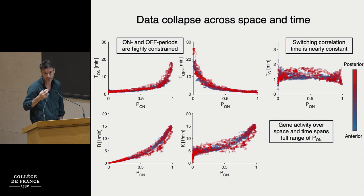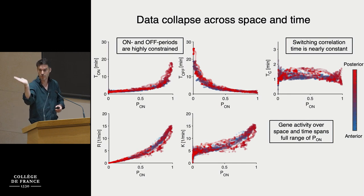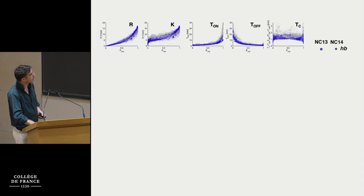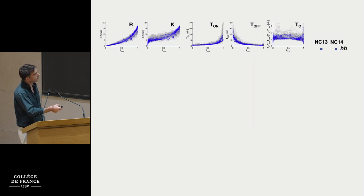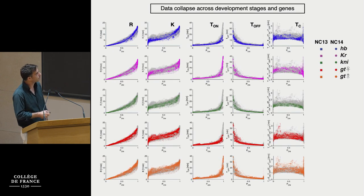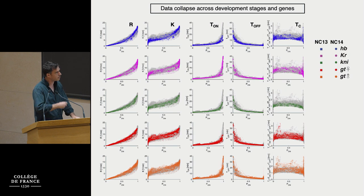This gives us a first timescale in the system: the switching correlation time — the time with which the promoter flops back and forth — is of the order of one to two minutes. This doesn't only hold for nuclear cycle 14; plotting nuclear cycle 13 data on top, it collapses as well. And it doesn't only work for hunchback — it works for all gap genes. These five relationships are conserved across all genes.